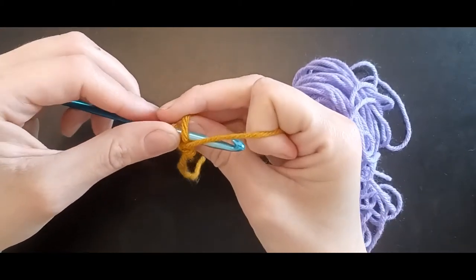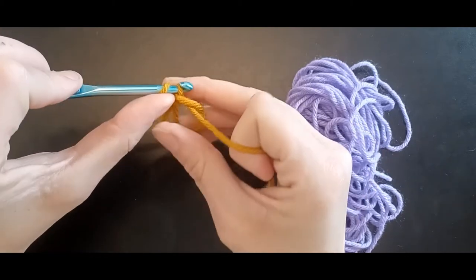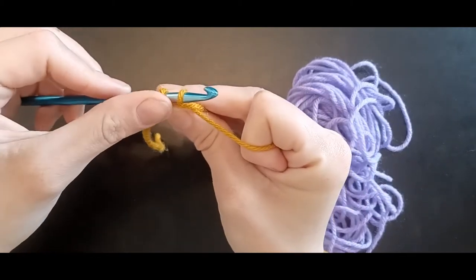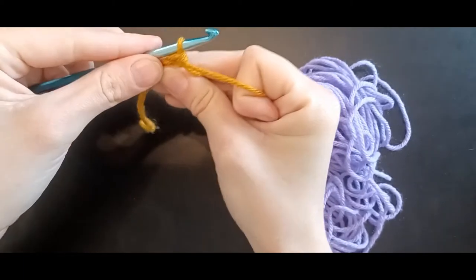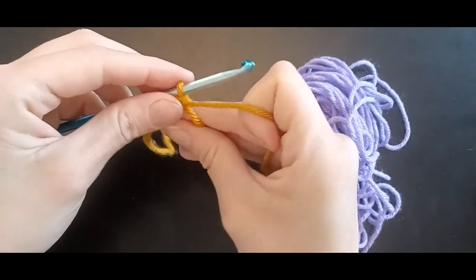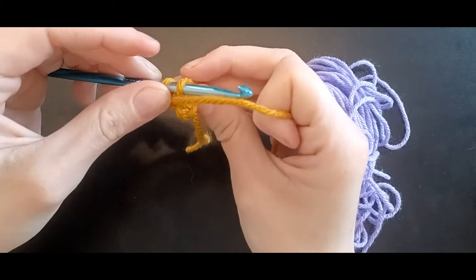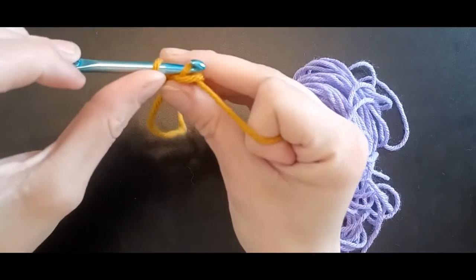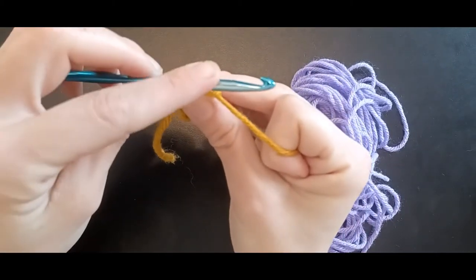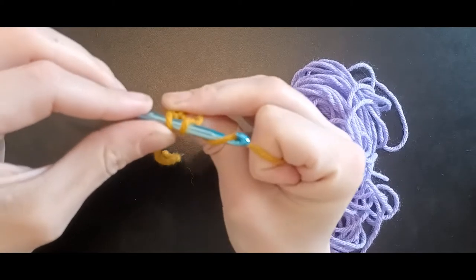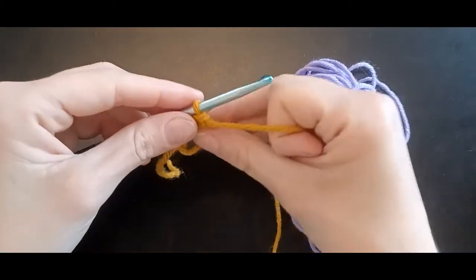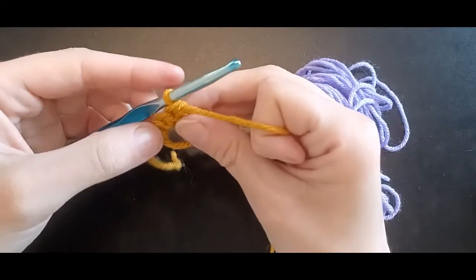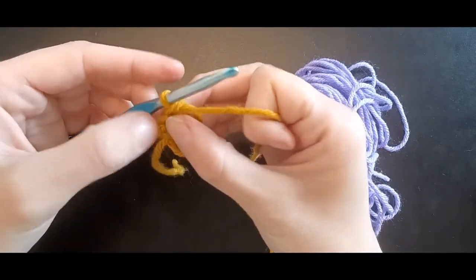Go through the hoop, grab your yarn, two loops on the hook, yarn over, pull through both loops. Go through the ring, grab your yarn. Through the ring, grab your yarn, two loops, yarn over, pull through both loops.